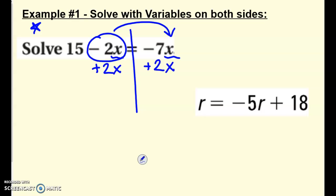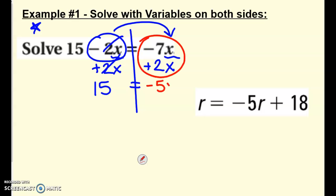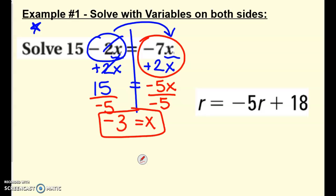Whatever I do to one side, I have to do to the other side. Cross out what cancels. Rewrite and bring everything down — we're still showing all our work so we don't miss anything. Now I can combine negative 7x plus 2x and I get negative 5x. Now I'm back to just a one-step equation where I can cancel things out to get x by itself. Divide by negative 5 on both sides and x is negative 3.